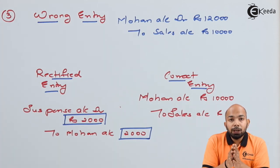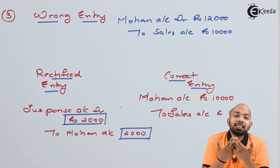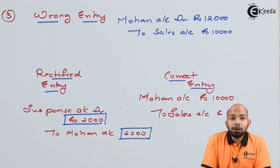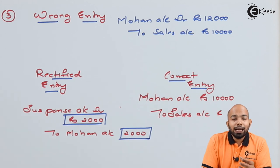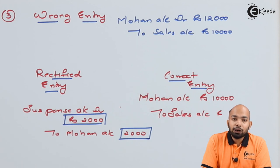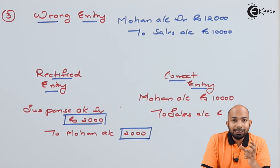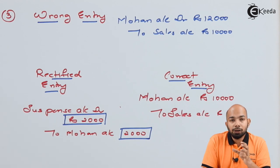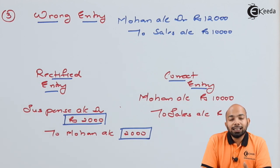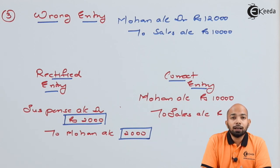An important additional note: the suspense account balance is never closed if errors are not yet rectified. You carry forward the balance to the next financial year and continue rectifications there. Once you find the error from the previous year's transactions, you close the suspense account by adjusting it against the profit and loss account, ensuring the income statements are not hampered.